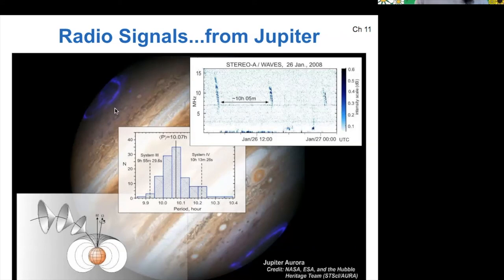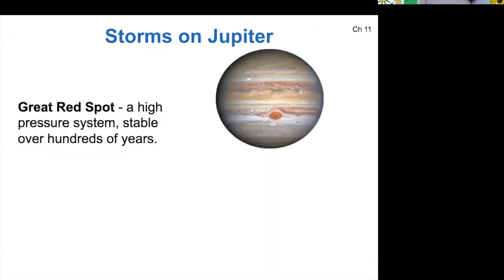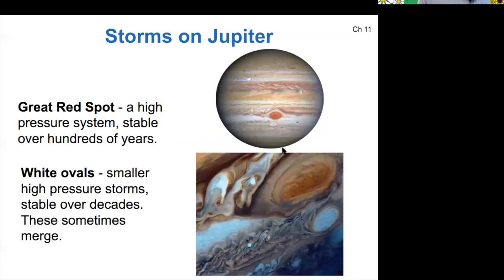You can also see blue markings on the north and south poles of Jupiter — those are Jupiter's auroras. The storms on Jupiter are called spots. The Great Red Spot is a high-pressure system that has been stable for hundreds of years, though it is dissipating slowly over time. The white ovals are smaller high-pressure systems that appear stable over decades — they can merge with each other and even merge into the Great Red Spot.